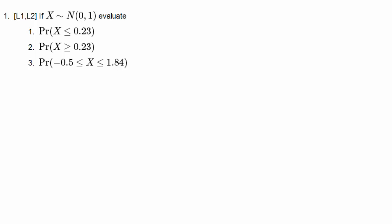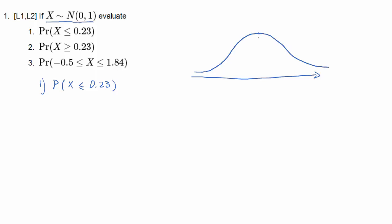Here are a few questions to practice skills in calculating probabilities when we have a normally distributed random variable — one that is standard normally distributed with zero mean and variance one. Let's look at the probability that X is smaller or equal to 0.23. A normally distributed random variable will have a PDF that looks something like this, centered around zero, the mean. Let's mark off 0.23.